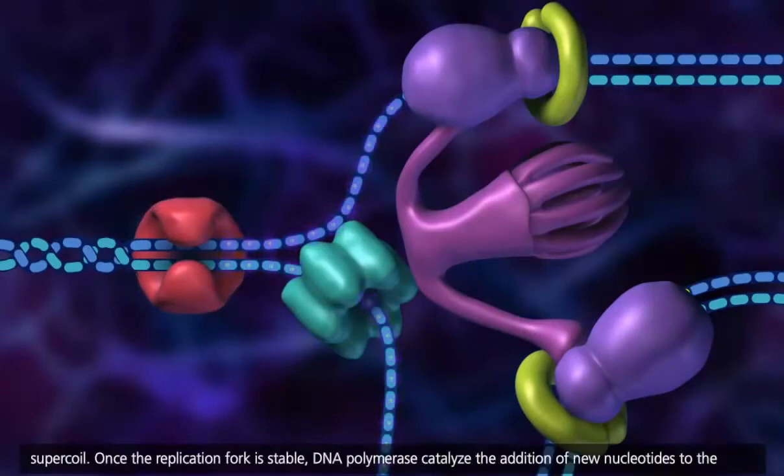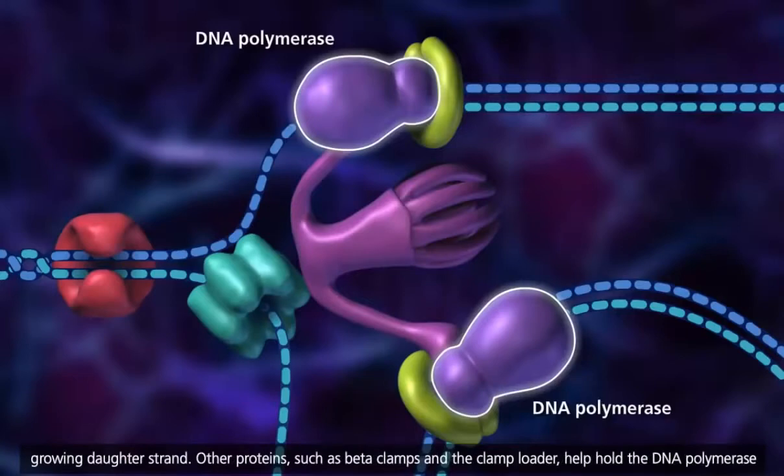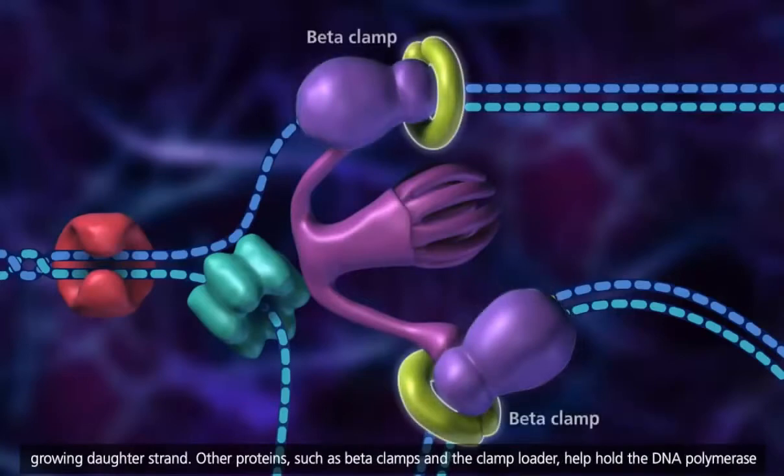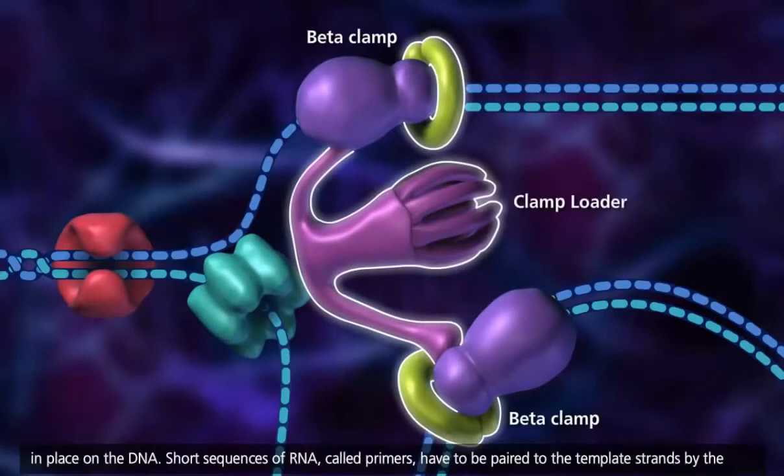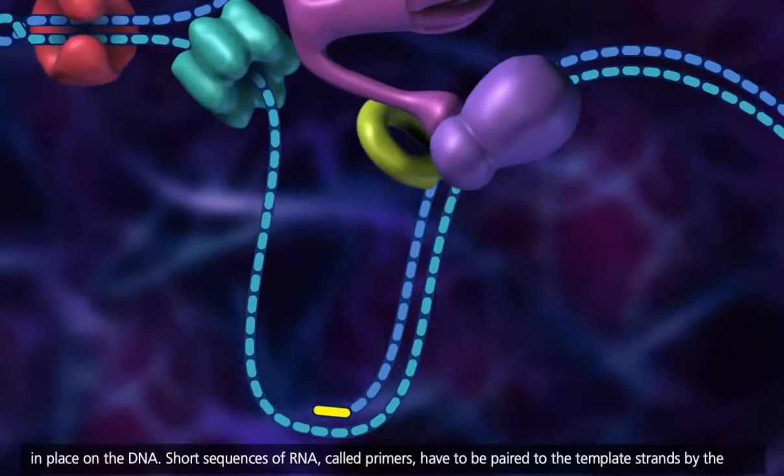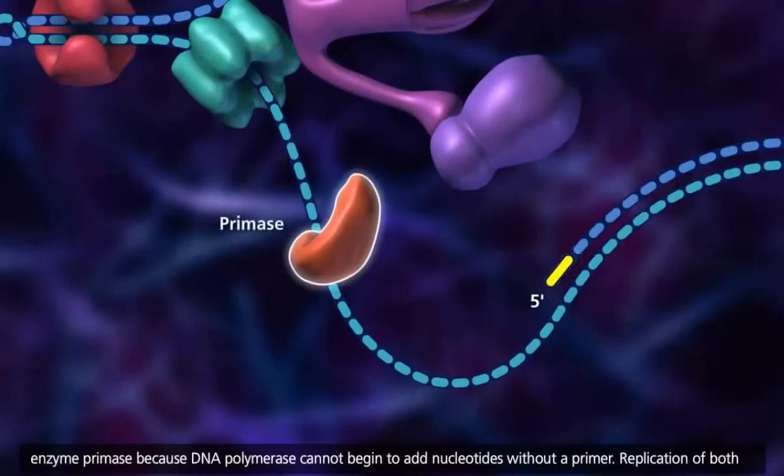Once the replication fork is stable, DNA polymerase catalyzes the addition of new nucleotides to the growing daughter strand. Other proteins, such as beta clamps and the clamp loader, help hold the DNA polymerase in place on the DNA. Short sequences of RNA called primers have to be paired to the template strands by the enzyme primase because DNA polymerase cannot begin to add nucleotides without a primer.